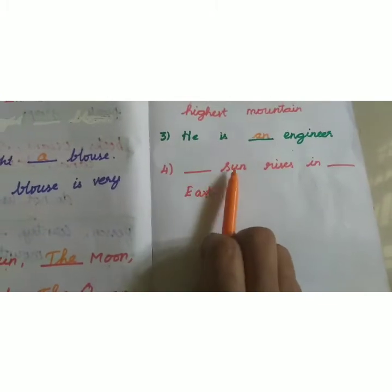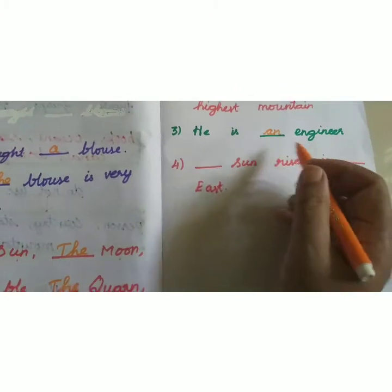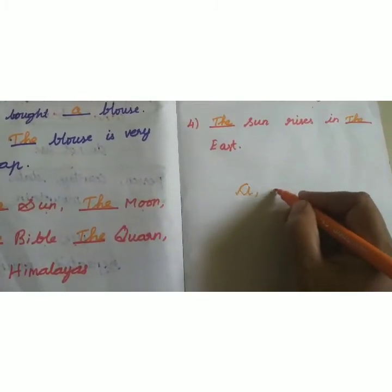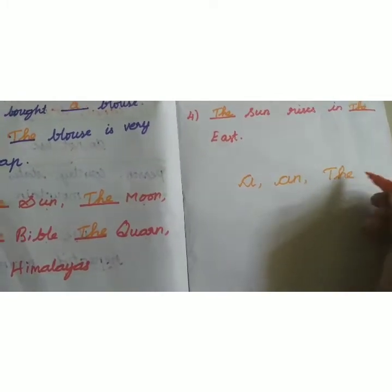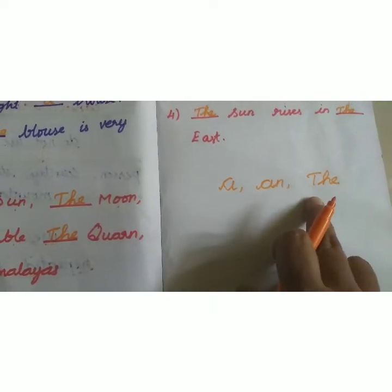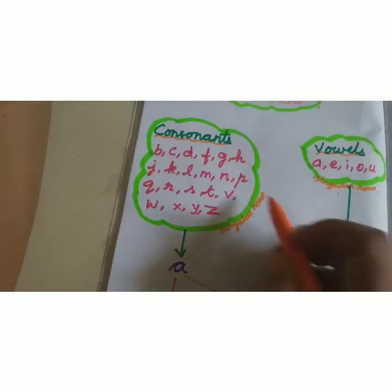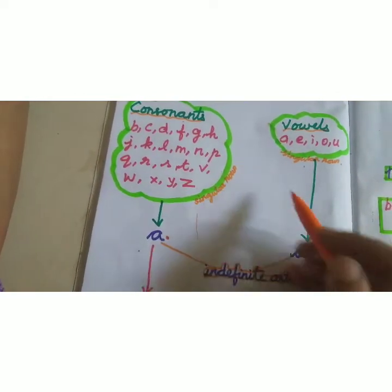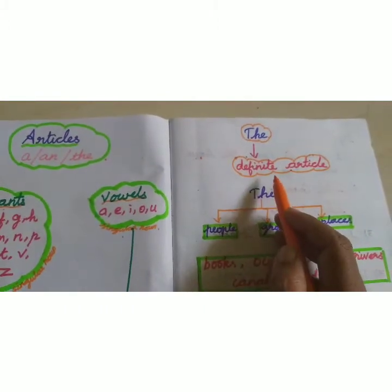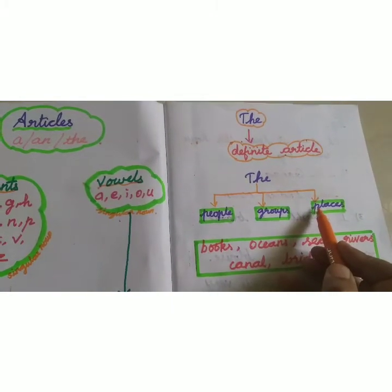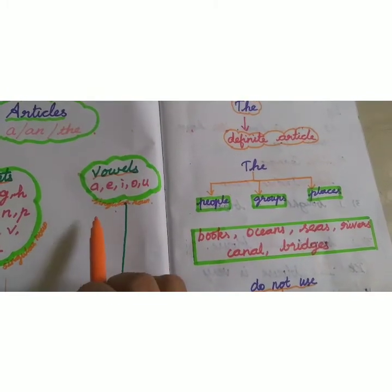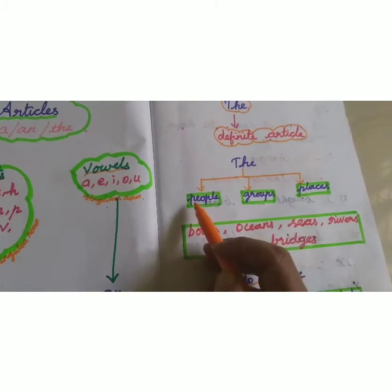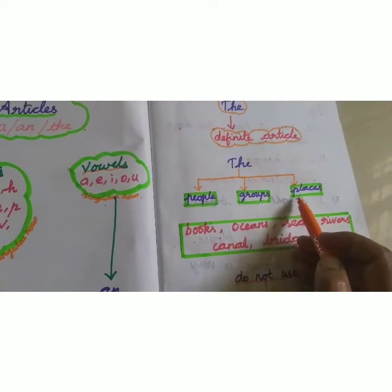The sun — when we see the sun, we immediately write THE. In summary: the articles are A, AN, and THE. A and AN are used only with singular nouns. A is used before consonants; AN is used before vowels. But THE is used with singular as well as plural nouns — for groups, places, and people. We use the article THE.